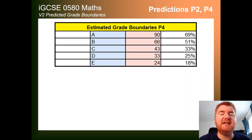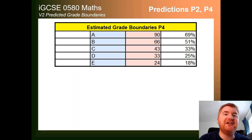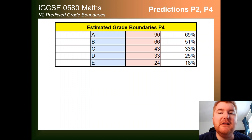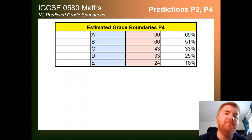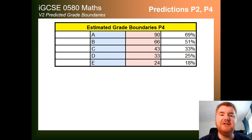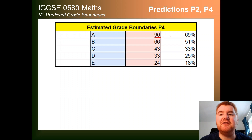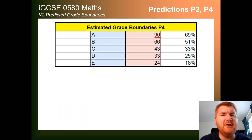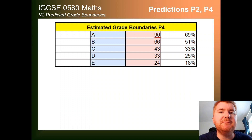With Paper 4, this has taken a bit more work to make sure I get these exactly as accurate as I would like. I've been through the paper to make sure it does match what is expected. You can see here A comes in at 90 out of 130, which is pretty typical — a little bit on the lower side compared to last year. But no big surprises.